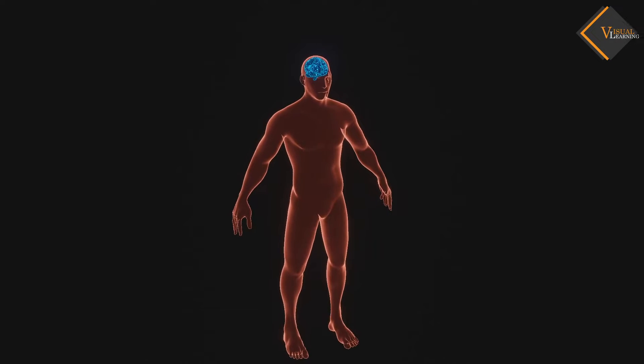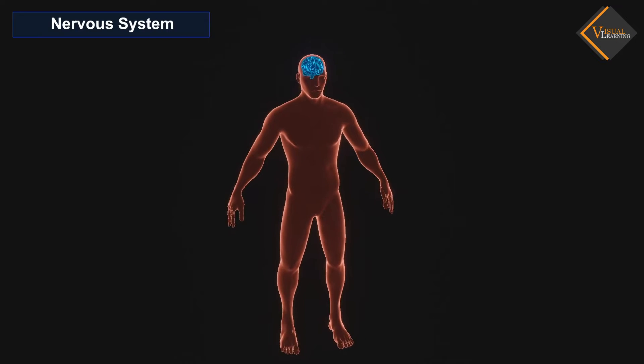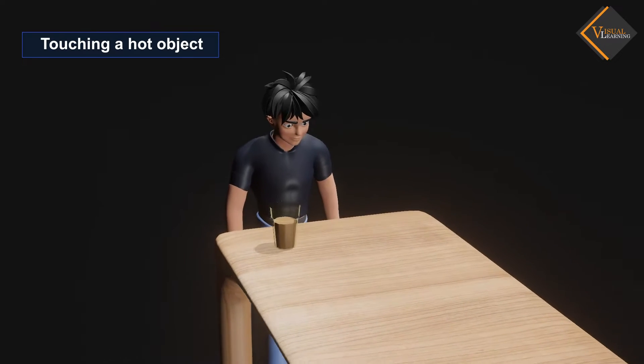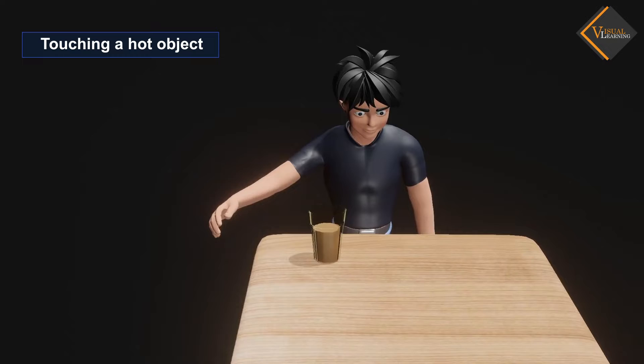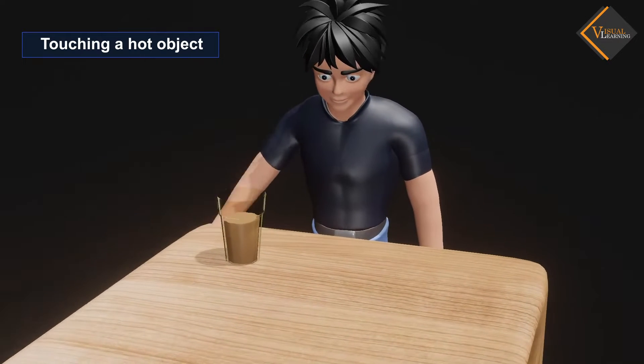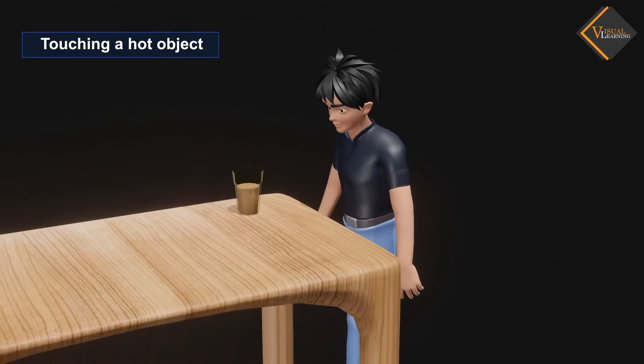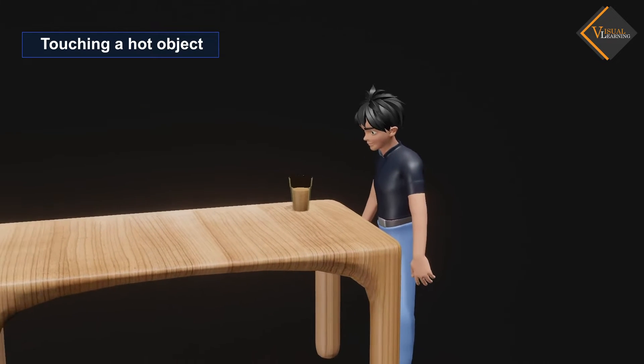In this video, we will understand the nervous system. Touching a hot object is an urgent and dangerous situation for us. We need to detect it and respond to it. How do we detect that we are touching a hot object?